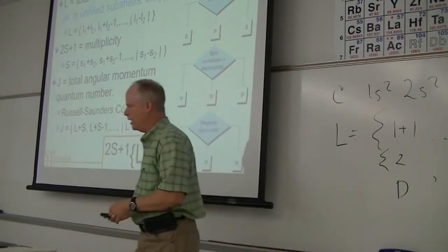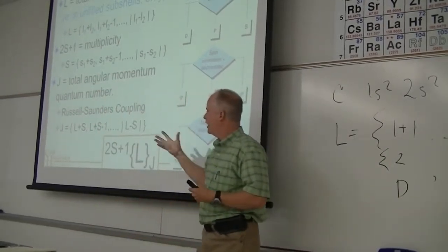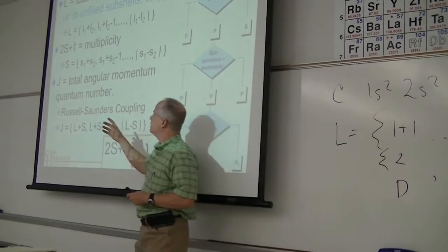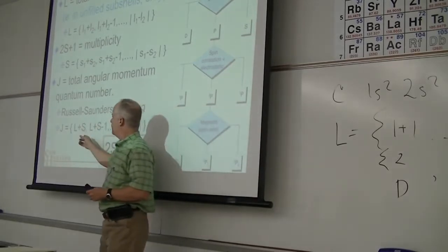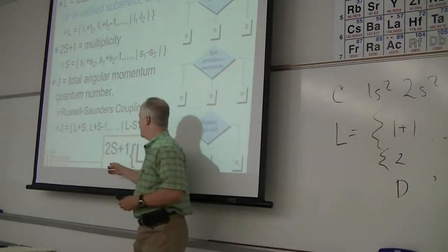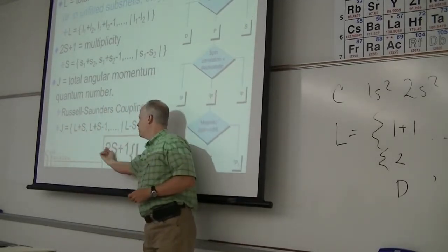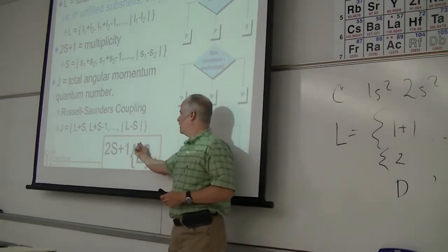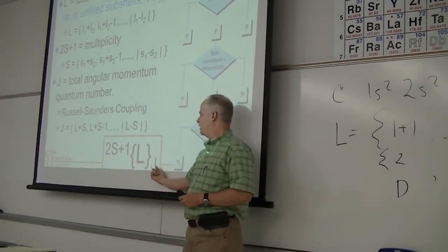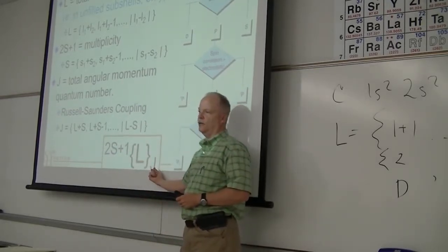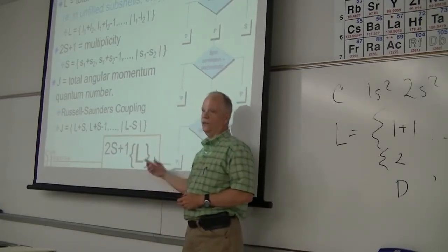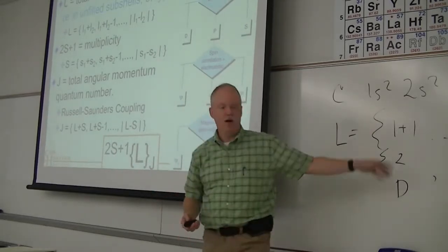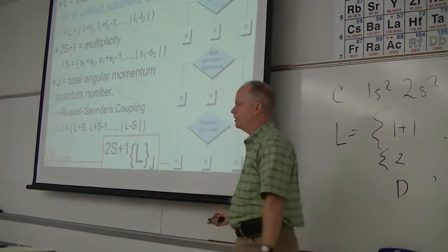We'll practice. For each one of these situations, each J value has the multiplicity on the left, the capital letter in the middle, and the J term as a subscript. We'll practice a few in the notes and finish up carbon in a second.